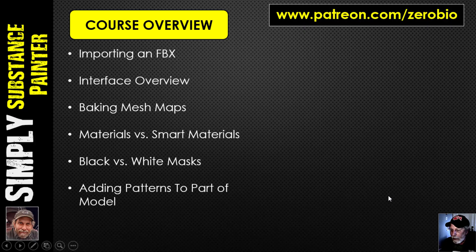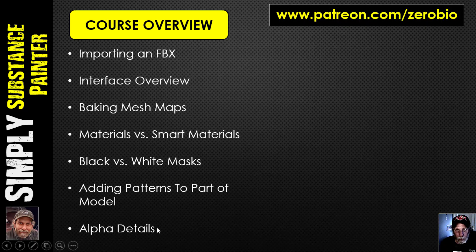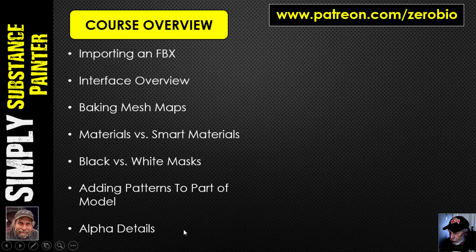We'll be adding patterns to certain parts of the model — as opposed to flood filling the whole thing — and that's going to require using masks to determine where a pattern should go and where it should not. We'll also be doing some alpha details. You saw some bolts and a few other details — that cross and bones on the front is a stock alpha that comes with Substance Painter. We could also talk about the source of some alphas.